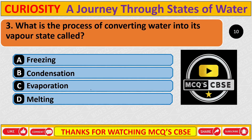What is the process of converting water into its vapor state called? The correct answer is C: Evaporation.